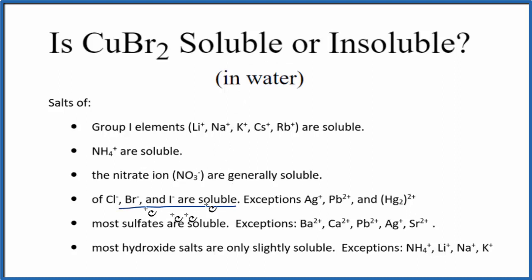When we look at this Br, that has a minus charge, and we have two of them. So the copper has to be 2 plus — that's why we're calling it copper 2.